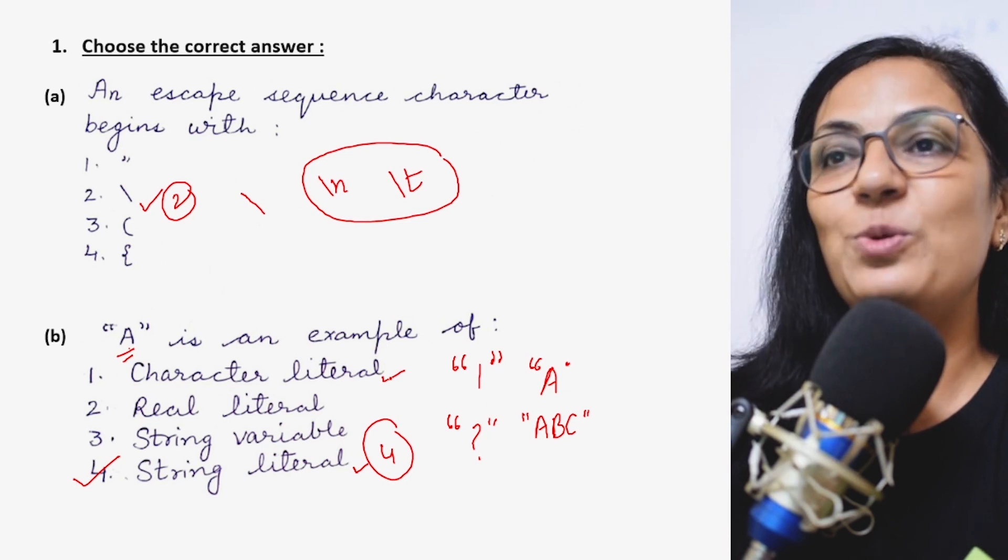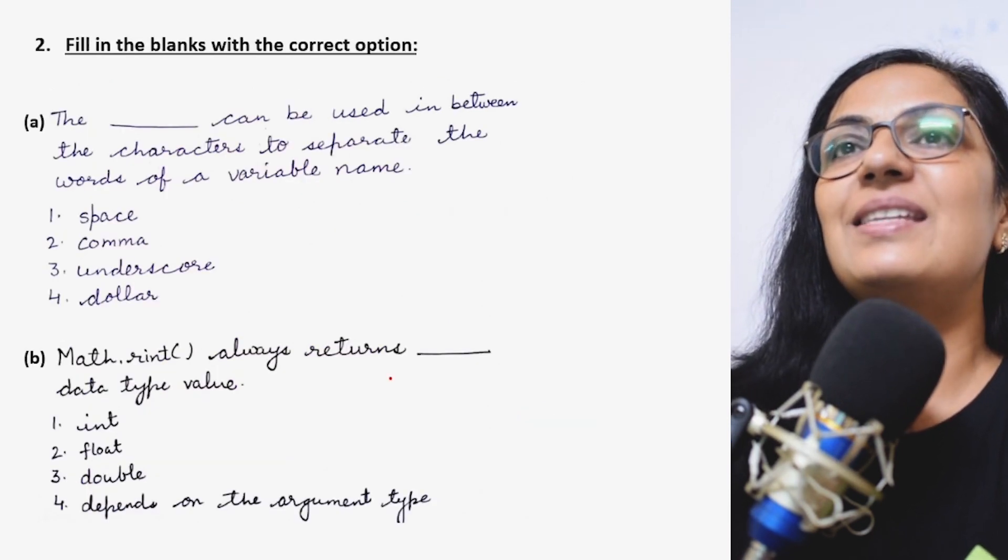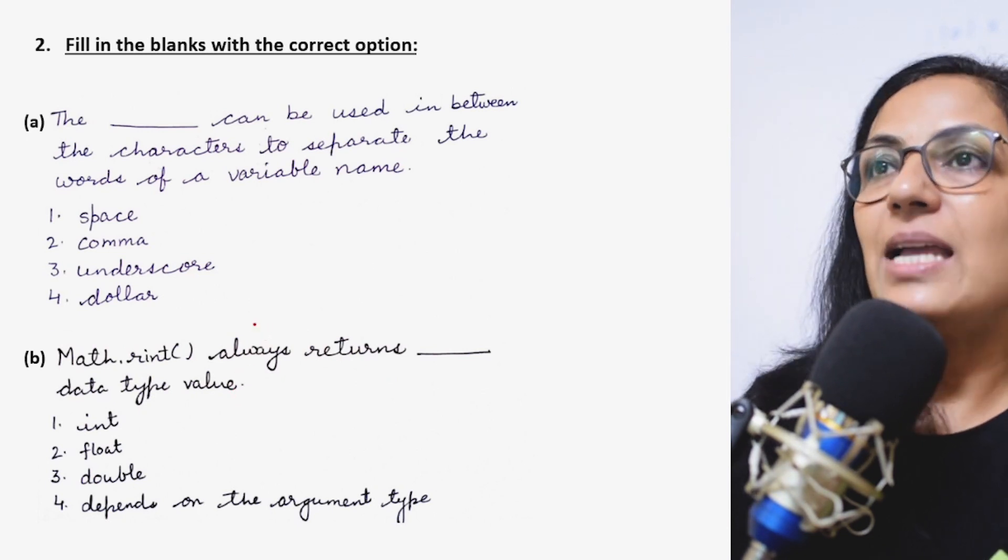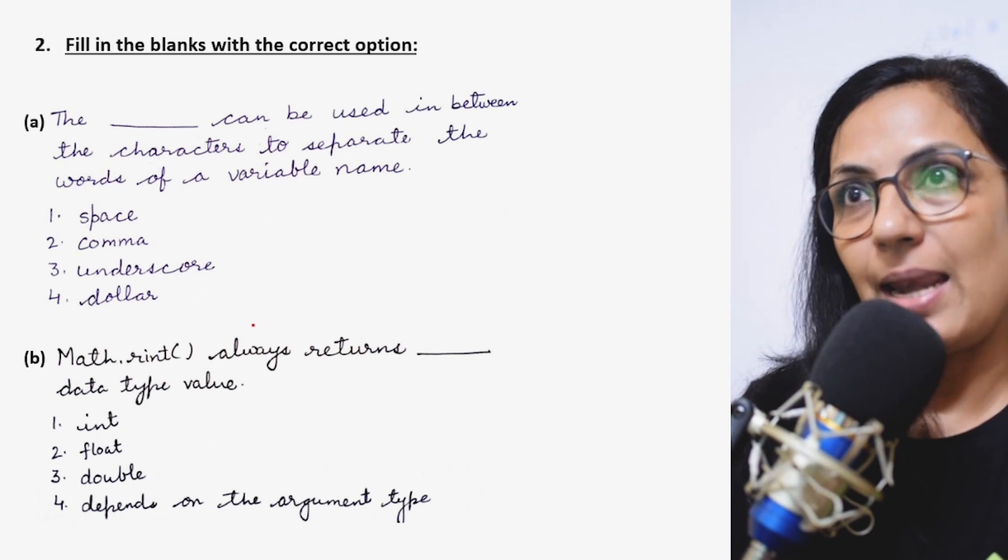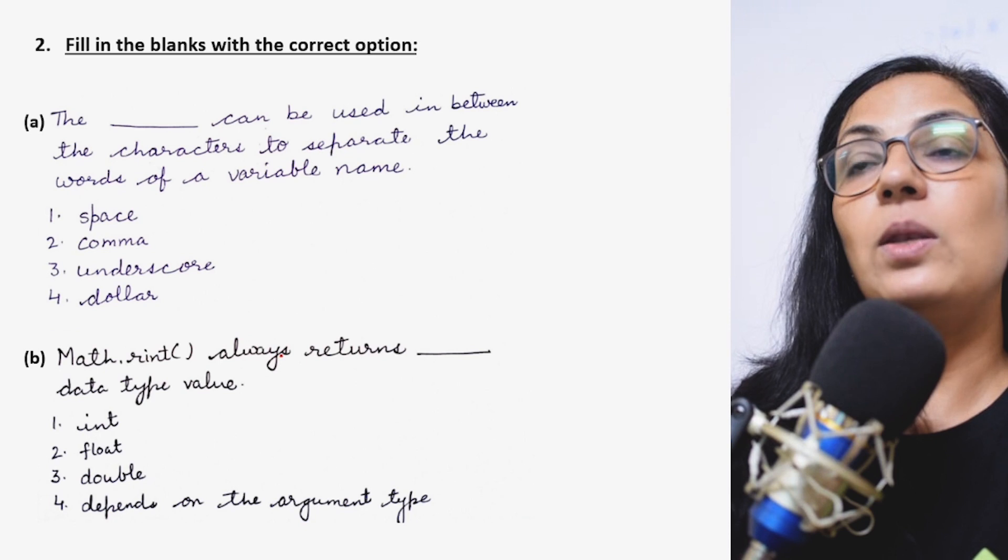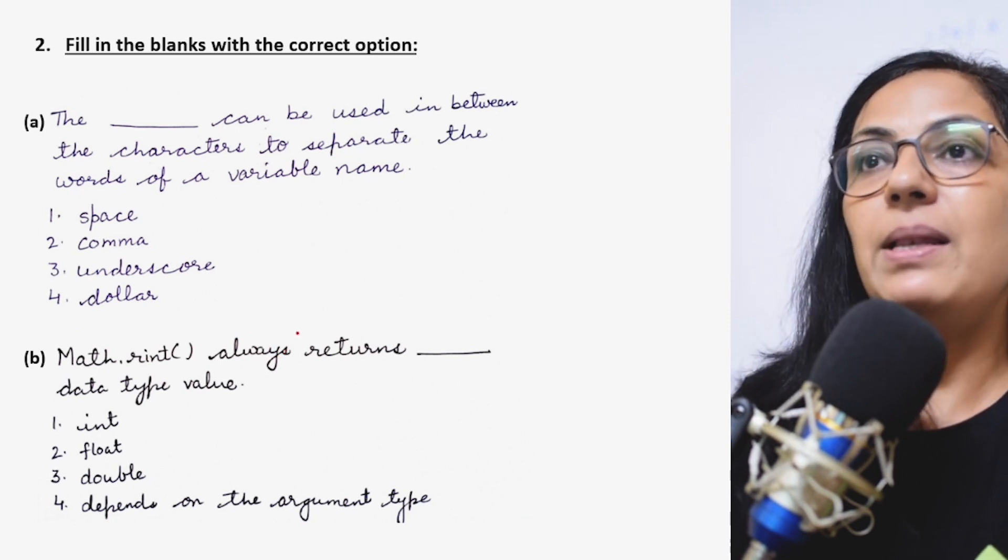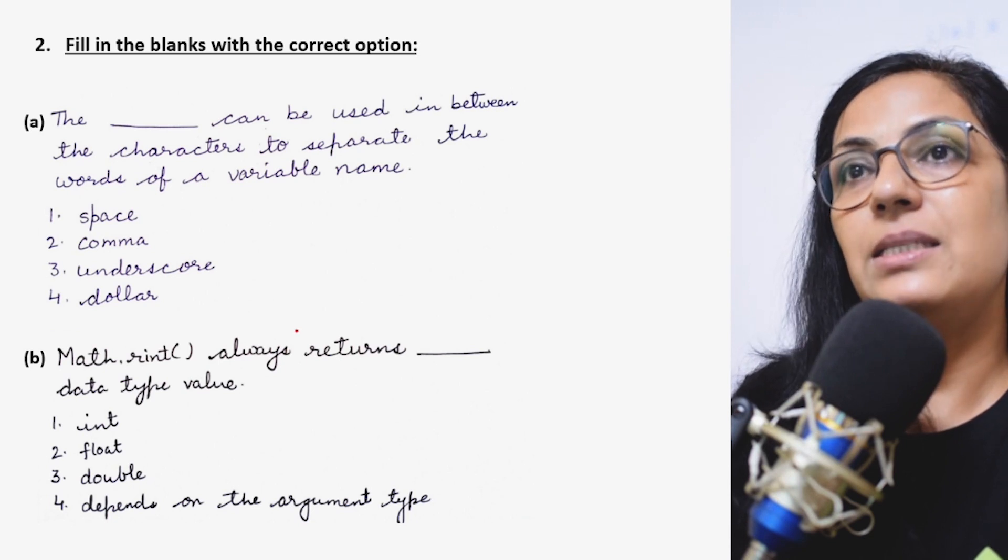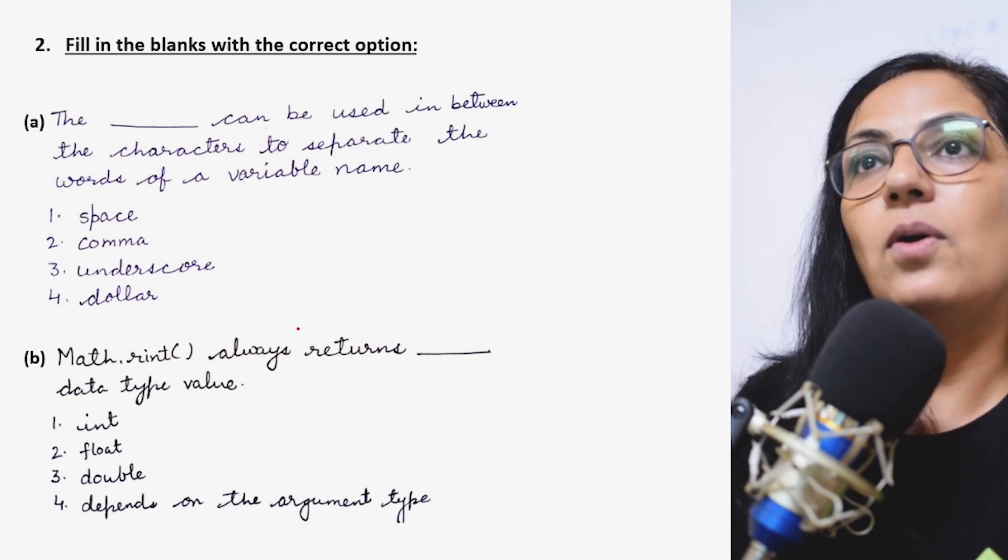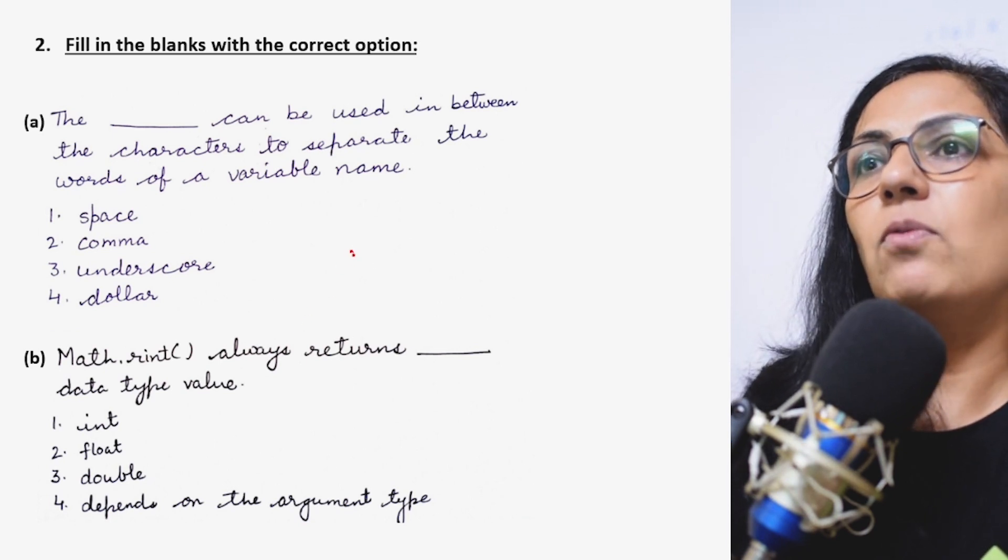Next is fill in the blanks with the correct option. The dash can be used in between the characters to separate the words of a variable name. Children, all of us we know the naming convention for variable name. The variable names are user-defined identifiers. We cannot use any special characters for writing the variable name.